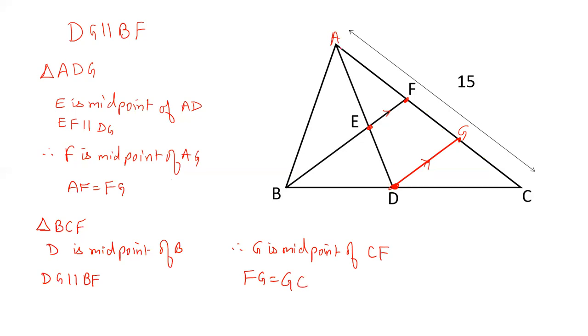So by taking two triangles ADG and BCF, we have proved that AF is equal to FG and FG is equal to GC. And therefore AF is one-third of AC.